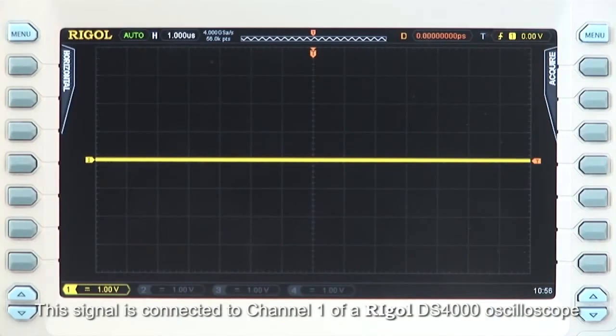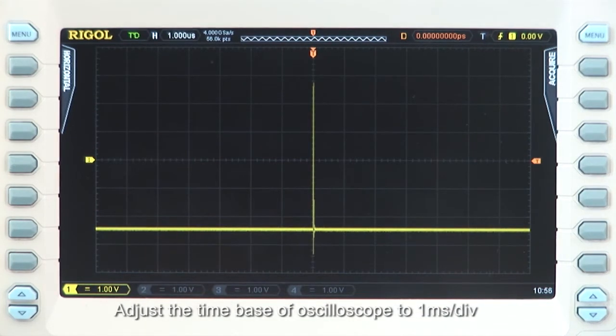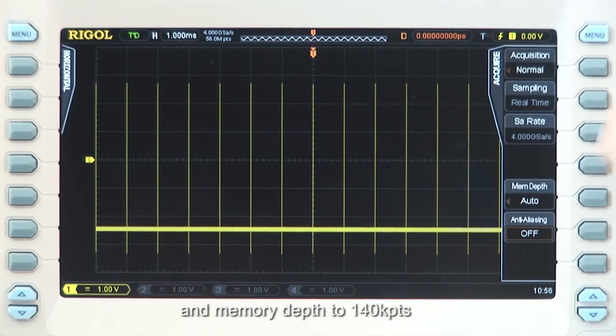The signal is connected to channel 1 of a Rigol DS4000 oscilloscope. Adjust the time base of the oscilloscope to 1 millisecond per division, the vertical scale to 1 volt per division, and memory depth to 140 kilopoints.